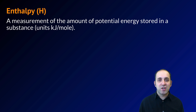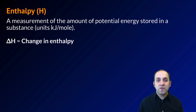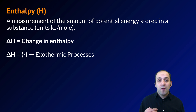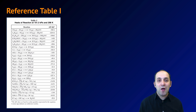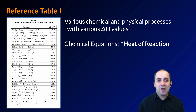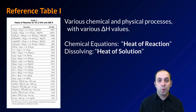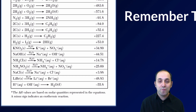A really useful concept when considering reaction kinetics is enthalpy. Enthalpy is the amount of potential energy stored in a substance, with units in kilojoules per mole. What we're interested in over the course of a reaction is the change in enthalpy — the delta H value. If delta H is negative, we have less energy at the end than we started with — that's the hallmark of an exothermic process. If delta H is positive, that's the hallmark of an endothermic process. Reference Table I lists delta H values for many different chemical and physical processes.